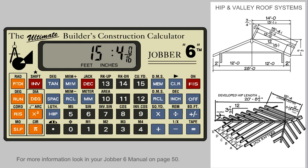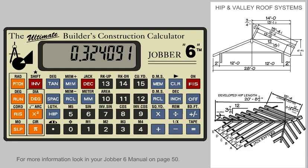With the basic roof data in the calculator, let's now solve the developed hip system for this roof. First, we need to go back to the pitch of the common rafters. Now by pressing the hip key, we will get the decimal value, which is the actual developed tangent for the hip member pitch. To convert this to a fractional dimension, press the fist key. This is our hip pitch.